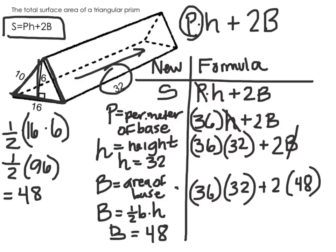36 times 32 gives me 1,152 plus 2 times 48, which is 96. So I have 1,152 plus 96, which is 1,248.